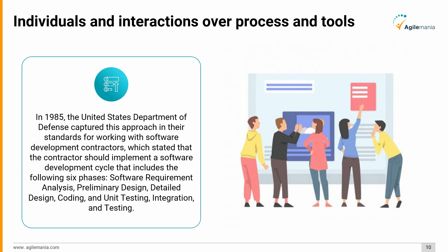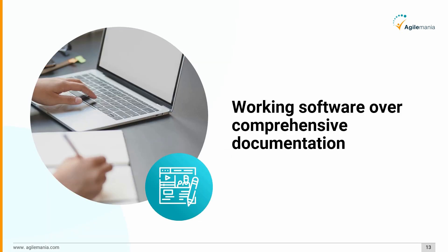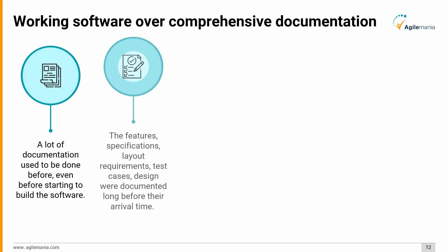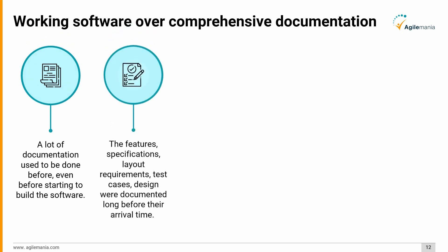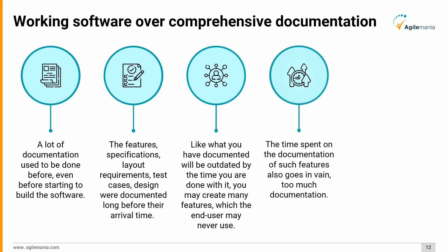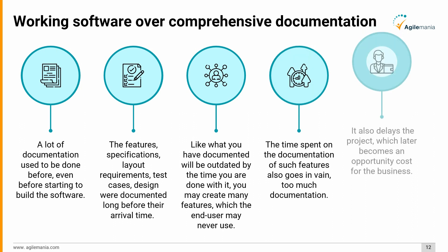The second value is working software over comprehensive documentation. A lot of documentation used to be done even before starting to build the software. Features, specifications, layout requirements, test cases, and design were documented long before their arrival time. What you documented would be outdated by the time you were done with it. You may create many features which the end user may never use, and the time spent documenting such features also goes in vain. Too much documentation delays the project, which becomes an opportunity cost for the business.